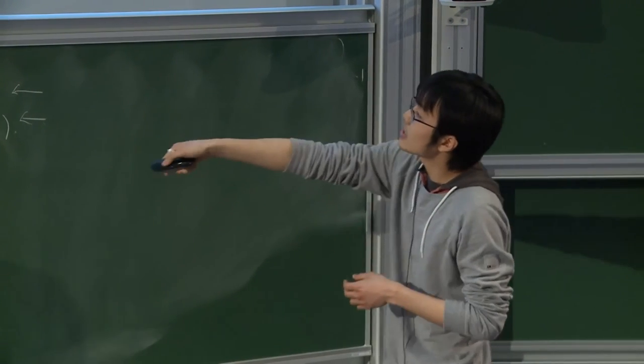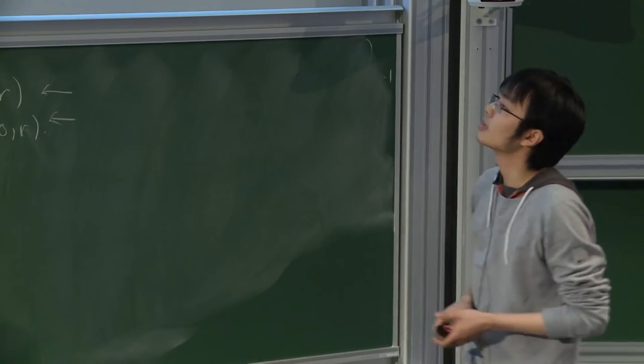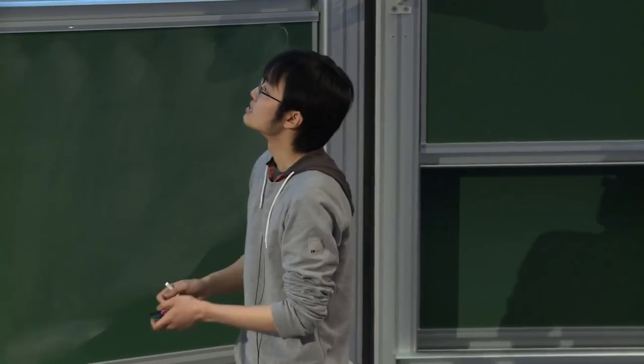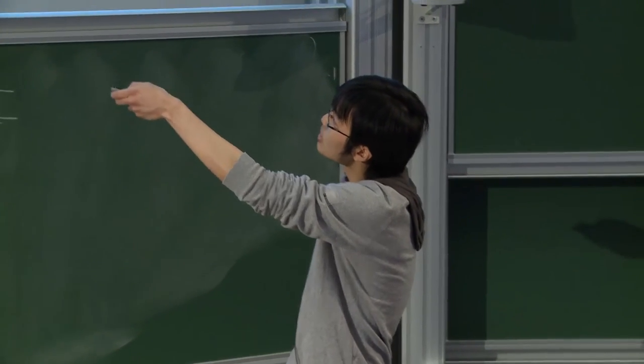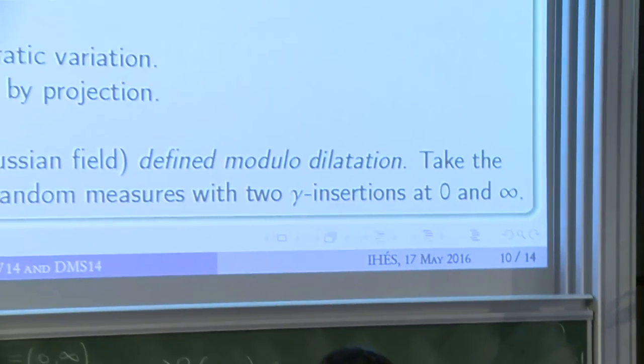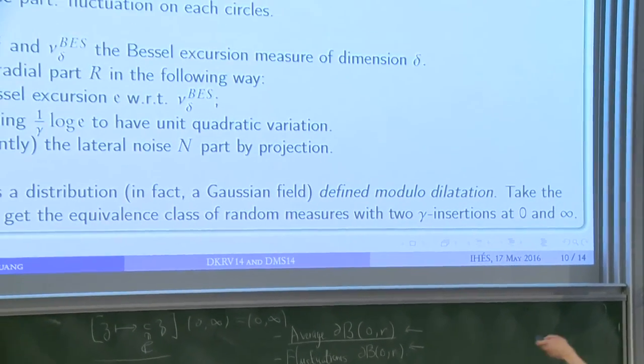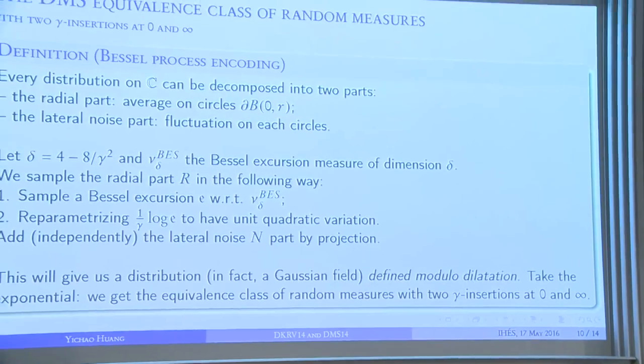Now, the point of this construction is that you can sample actually just these two parts in an independent way. We can give explicit constructions—explicit ways to sample these two parts. I will not talk about the fluctuation part because it's given by some abstract manner, but it's not very difficult. I'll talk about this part, the average.